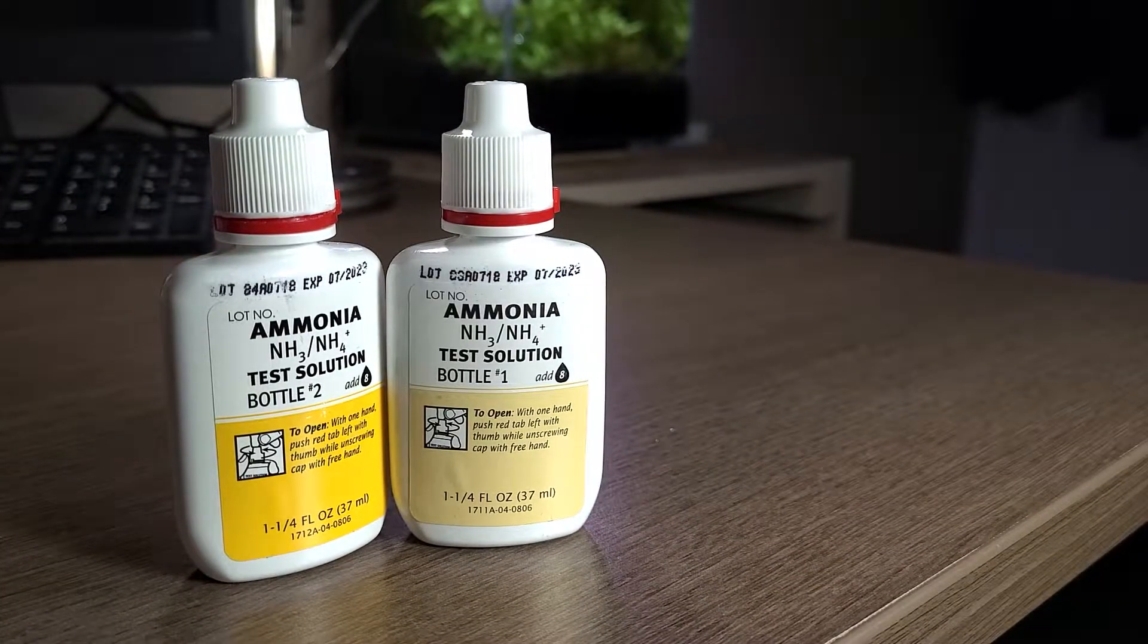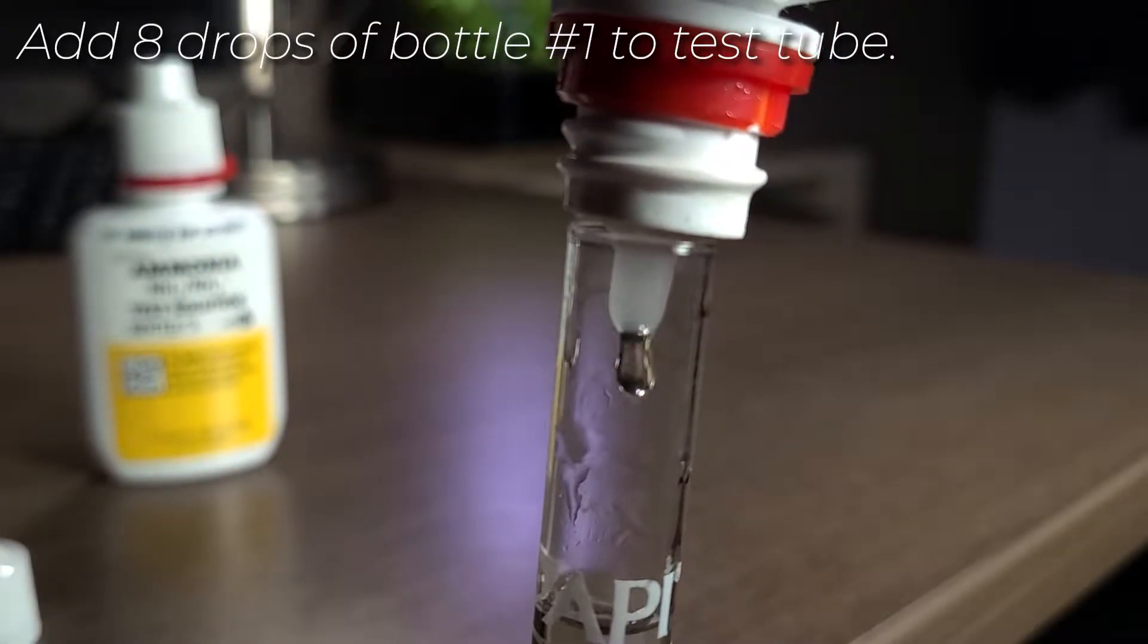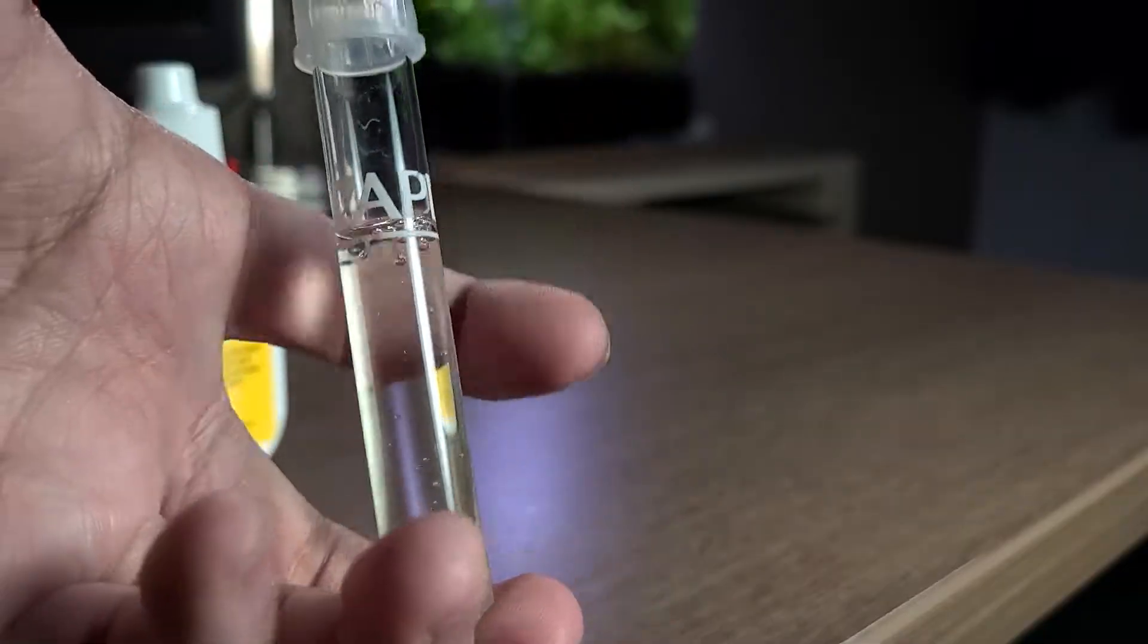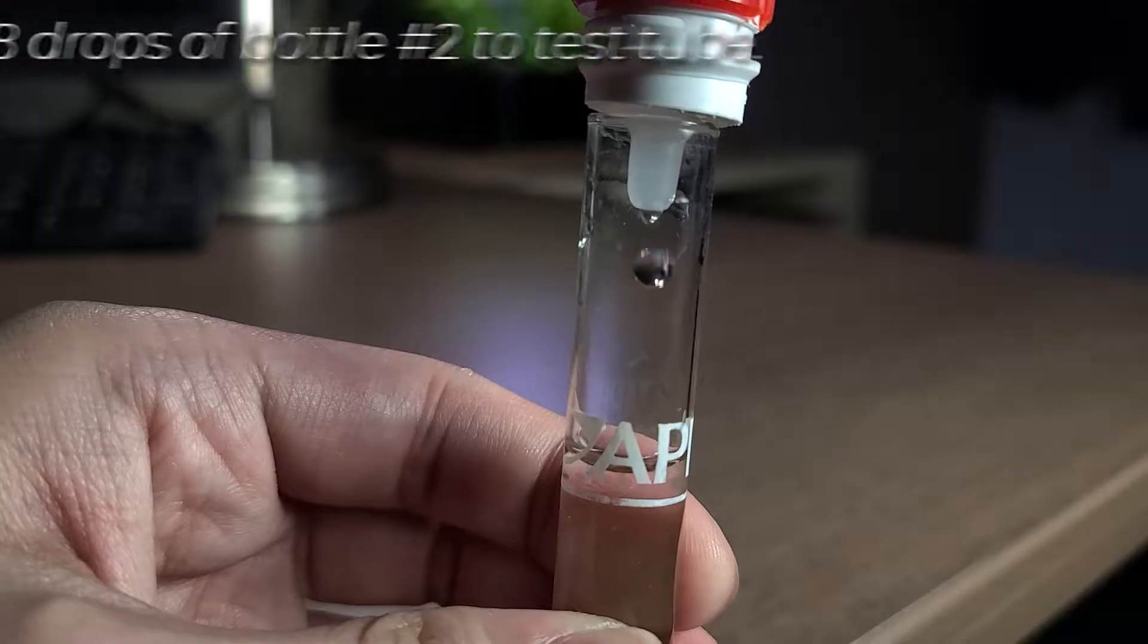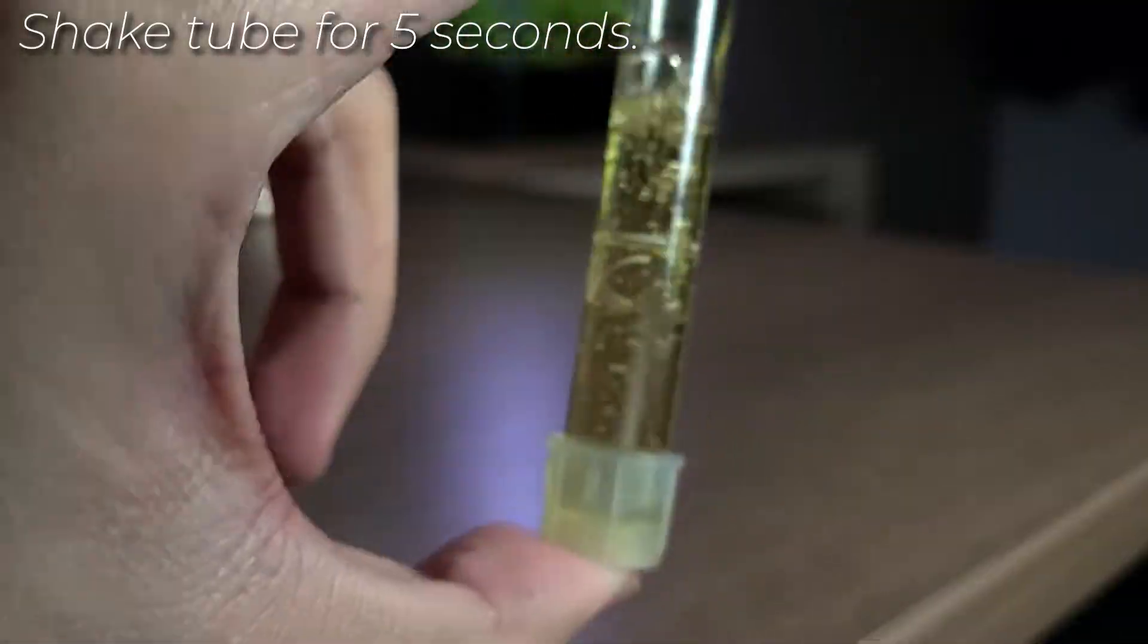For ammonia, we are given two bottles. Take the first bottle, add eight drops, and then shake to ensure uniformity of the drops. There's no need to wait, so we can add eight drops of bottle number two and then vigorously shake the tube for five seconds.